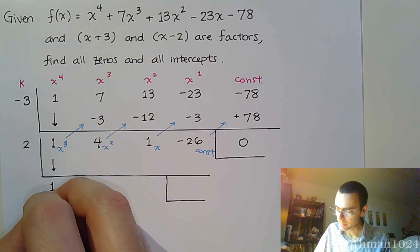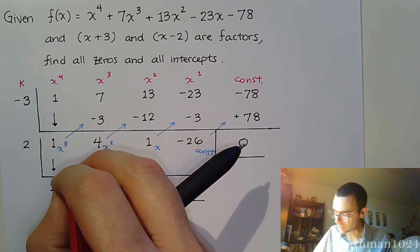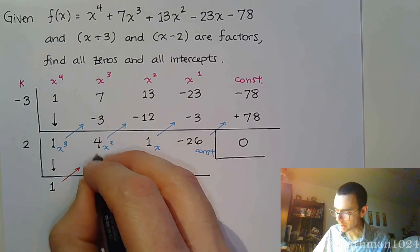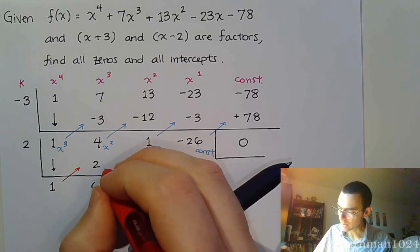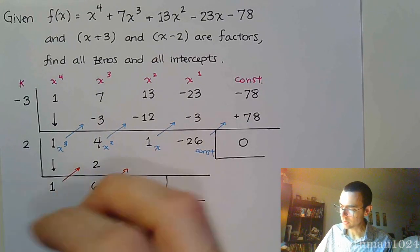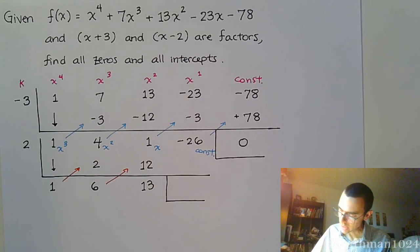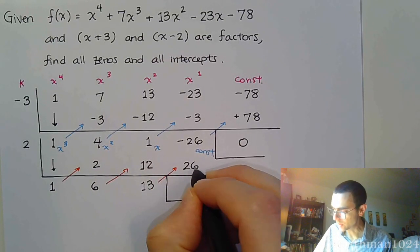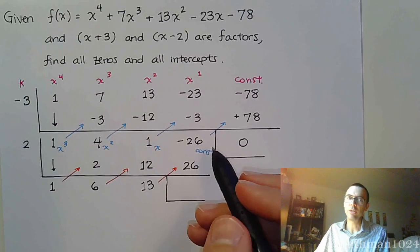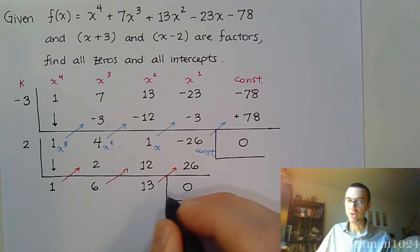And now we do synthetic division. Bring down the 1, and let's do this. 1 times 2 is 2. Combine these guys, we get 6. 2 times 6 is 12. 1 and 12 gives me 13. Multiply times 2. We get 26, and we see we're on the right path. Negative 26 and positive 26 will give me a remainder of 0.